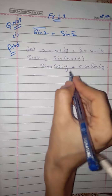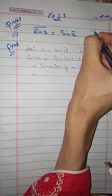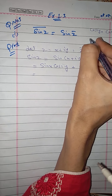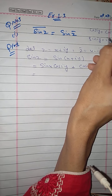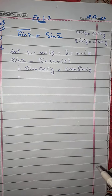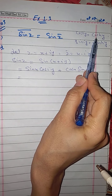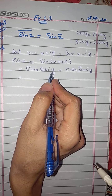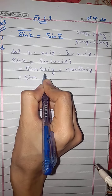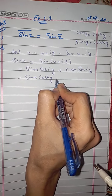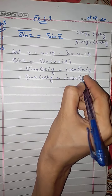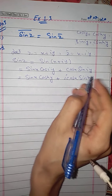One thing to keep in mind: cos(iy) directly changes to cosh(y) in hyperbolic form. So cos(iy) becomes cosh(y). For sin(iy), it becomes i·sinh(y). So we get: sin x · cosh(y) + cos x · i·sinh(y). This is our expression for sin(z).